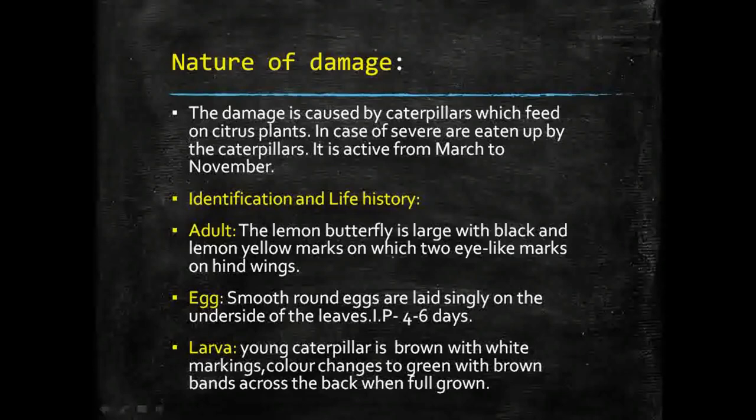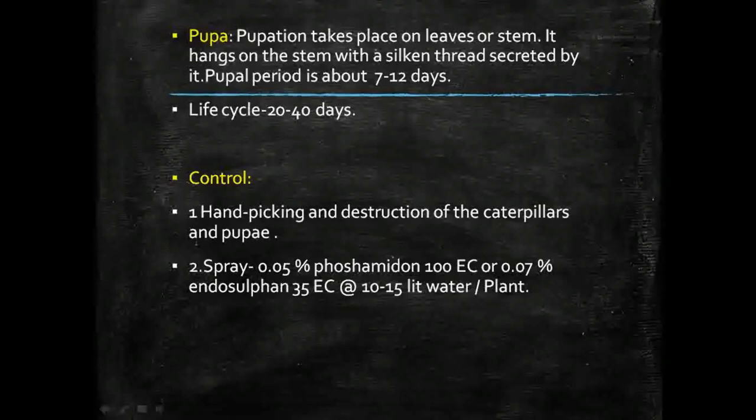After the larval stage, the caterpillar enters the pupal stage. Pupation takes place on leaves or stems — the larva secretes a silken thread and hangs from the stem using it. The pupal period lasts about seven to twelve days depending on environmental conditions.